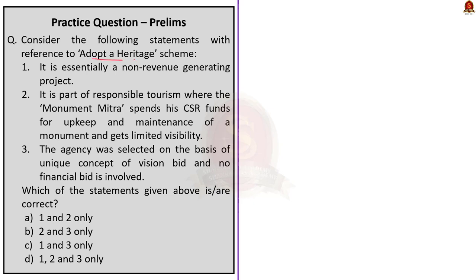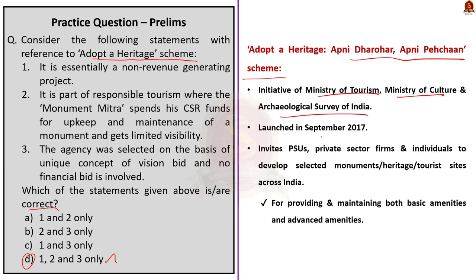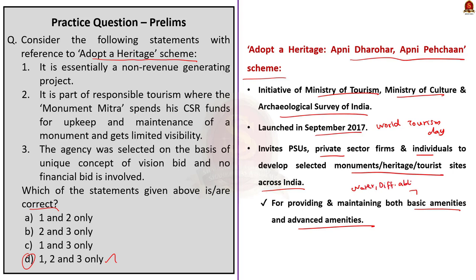Our next question is about the Adopt a Heritage scheme. The correct answer is option D — 1, 2 and 3 only. The 'Adopt a Heritage — Apni Dharohar, Apni Pehchaan' scheme is an initiative of the Ministry of Tourism in collaboration with the Ministry of Culture and Archaeological Survey of India. It was launched in September 2017 on World Tourism Day by President Ramnath Kovind. Under it, the government invites entities including public sector companies, private firms, and individuals to develop selected monuments and heritage and tourist sites across India, providing and maintaining both basic amenities (drinking water, accessible facilities, signage, cleanliness, illumination) and advanced amenities (surveillance, night viewing, tourism facilitation centers).